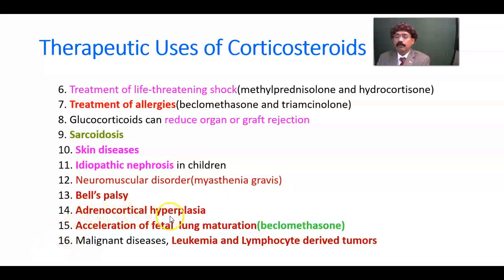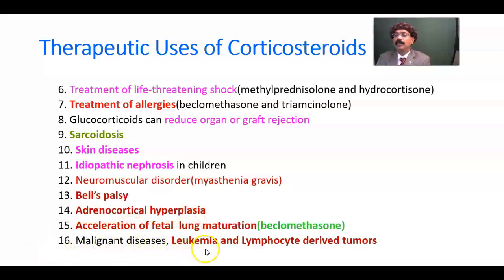Adrenocortical hyperplasia is treated by glucocorticoids. Acceleration of fetal lung maturation is done by beclomethasone — ideally given around 48 hours before delivery, with another dose given 24 hours before delivery — which stimulates type 2 pneumocytes to produce surfactant. Malignant diseases like leukemia and lymphocyte-derived tumors such as Hodgkin's lymphoma and non-Hodgkin's lymphoma are also managed by corticosteroids, especially glucocorticoids.